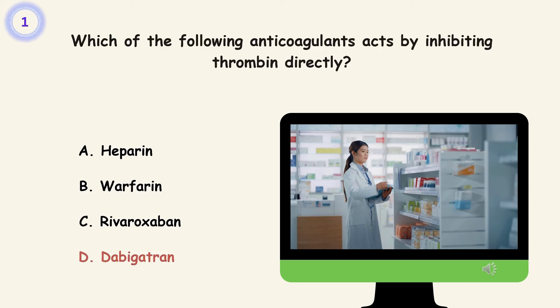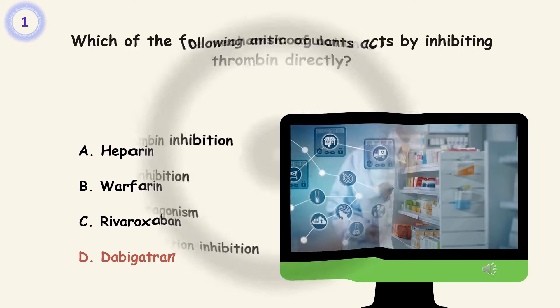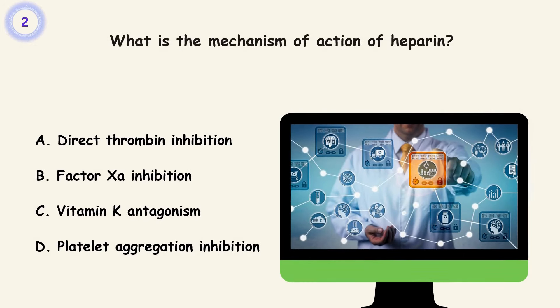Question 2. What is the mechanism of action of heparin? A. Direct thrombin inhibition. B. Factor Xa inhibition. C. Vitamin K antagonism. D. Platelet aggregation inhibition. Answer is A. Direct thrombin inhibition.